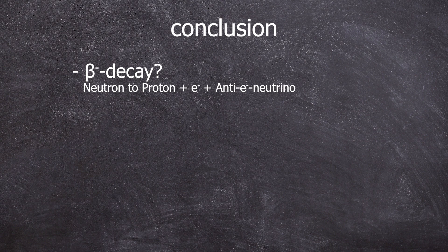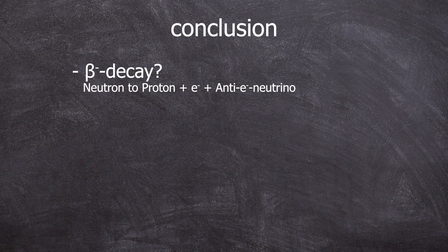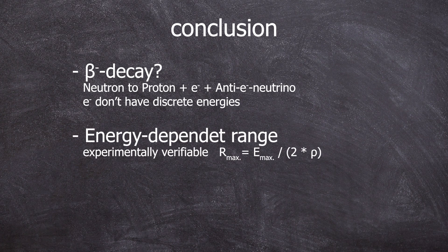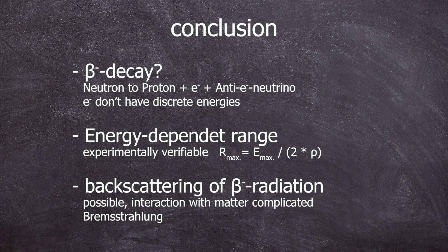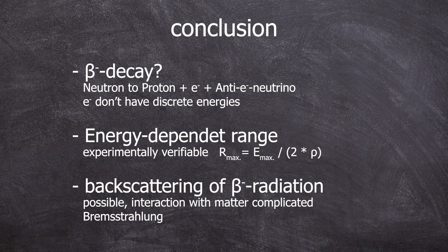In conclusion, the beta minus decay transforms a neutron into a proton and emits an electron and an anti-electron neutrino. The energy of the electron is not discrete and their range can be experimentally determined using aluminum foils. Beta radiation can be backscattered and its interaction with matter, especially the production of Bremsstrahlung, is quite complex.